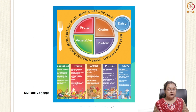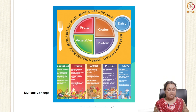The 'My Plate' concept has replaced the earlier food pyramid. The plate should contain a balanced amount of fruits, vegetables, proteins, and grains. Protein need not be animal protein; it can be plant protein or dairy protein. For a healthy lifestyle, all these criteria must be met in a balanced state.